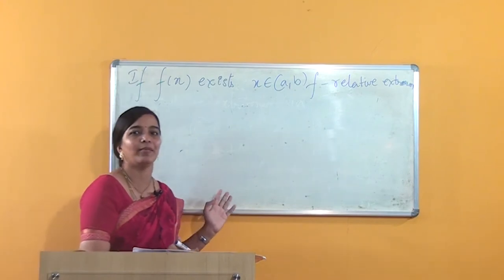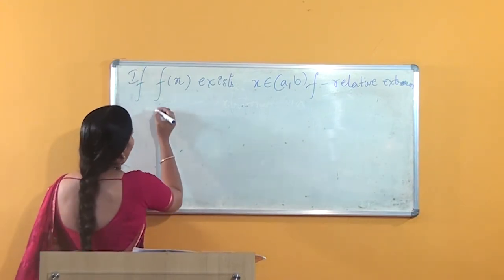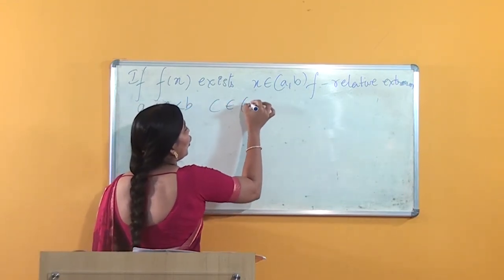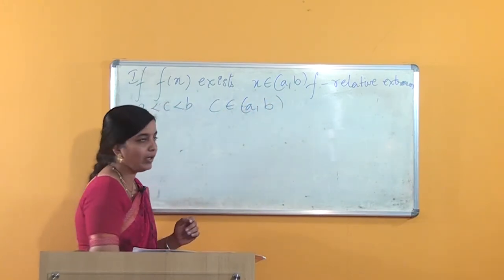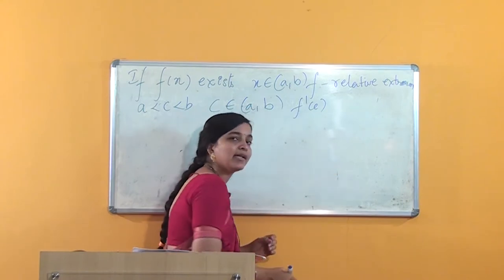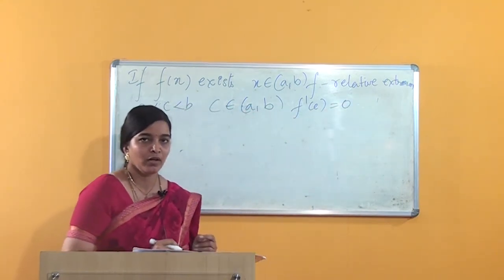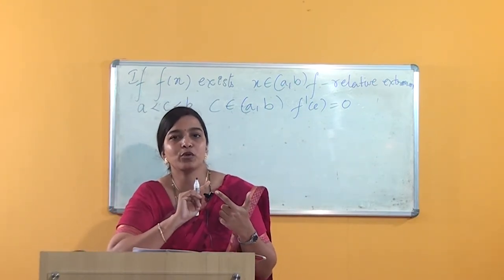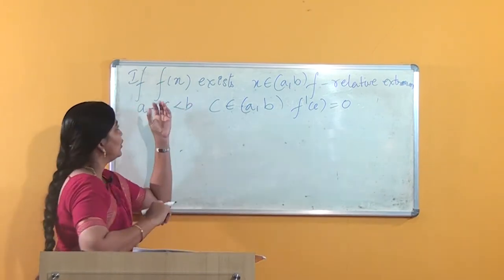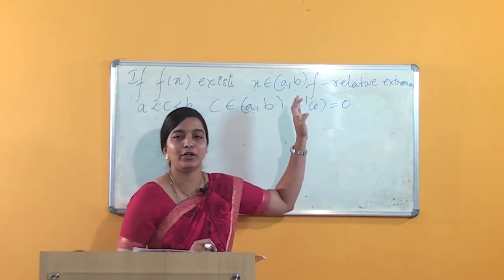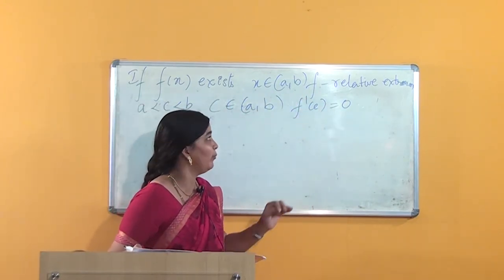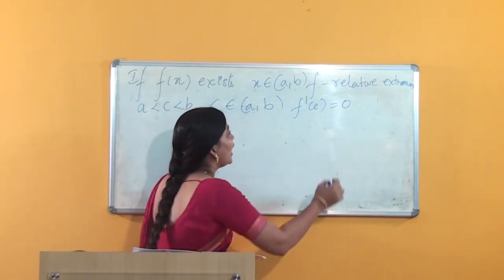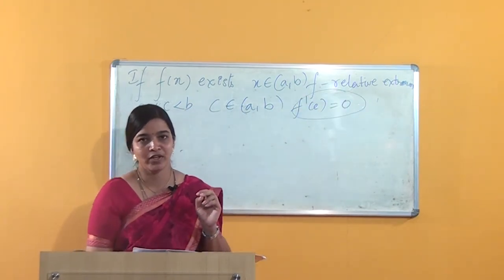Extremum value means it may have the maximum or the minimum value. If we get a point c such that c lies between a and b — c belonging to the open interval (a, b) — and if f'(c) exists, then f'(c) is equal to zero. What is given: the function value exists for all x in (a, b), it has the relative extremum value, and f'(c) exists. What is to be proved: f'(c) = 0.